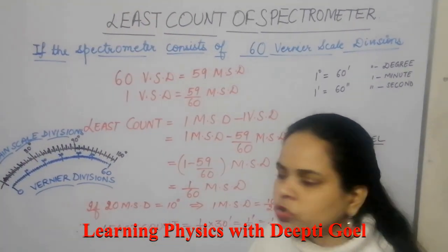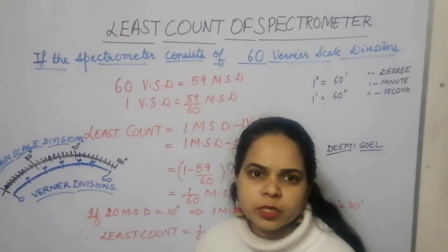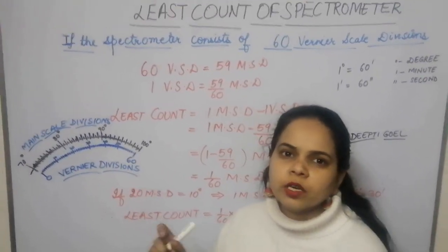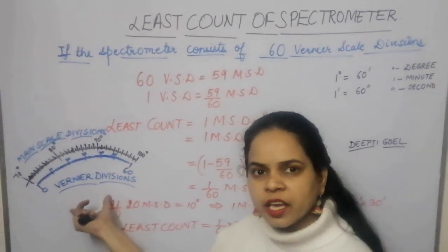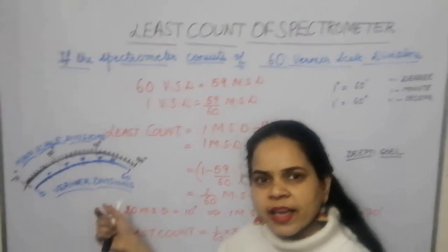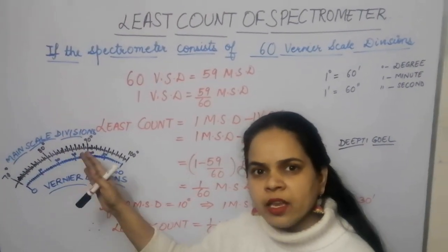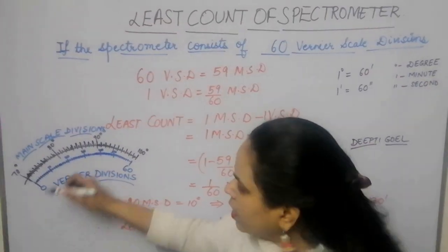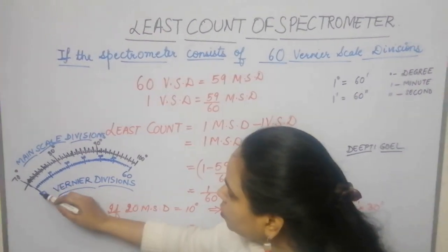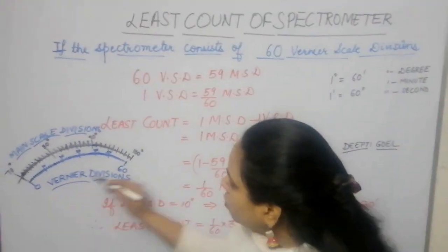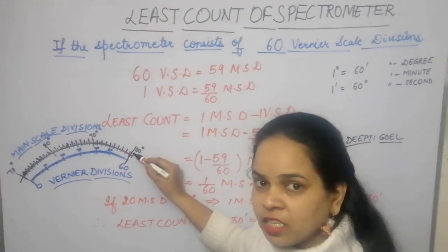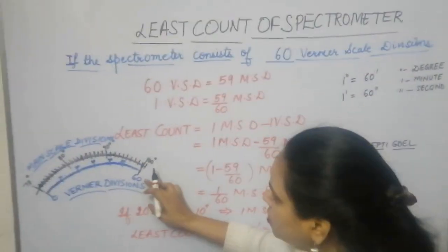The vernier scale shown here consists of 60 divisions. In a vernier, the number of vernier scale divisions always coincides with one less number of main scale divisions. So if there are 60 vernier scale divisions, it is designed to coincide with 59 main scale divisions. You can see the zero of the vernier coinciding with 70 degrees of the main scale, and the 60th vernier division coinciding with the 59th main scale division.